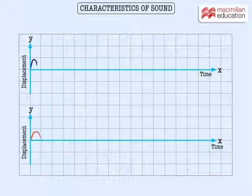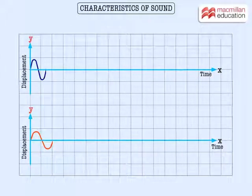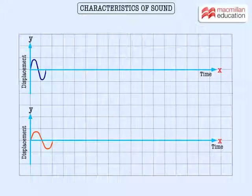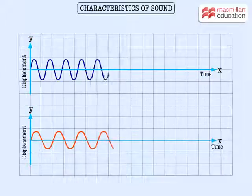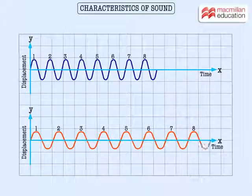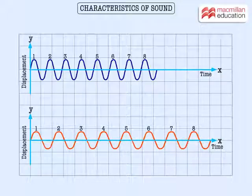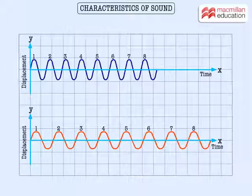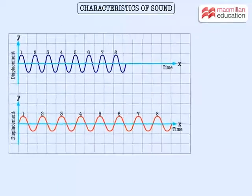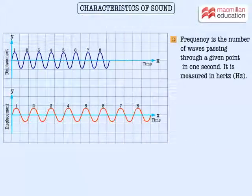Each vibration creates one wave. On an x and y axis, this is how we represent a sound wave. Let's continue this to represent eight waves. We will use this to understand certain key terms.